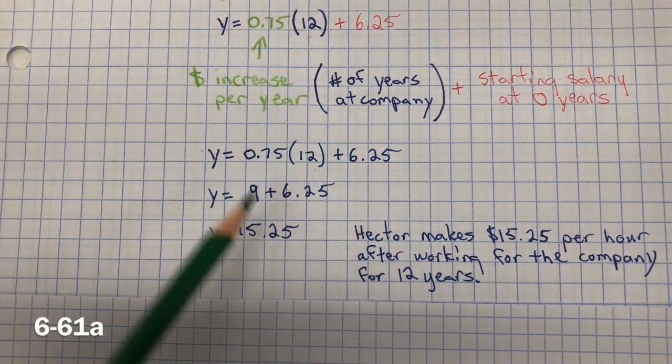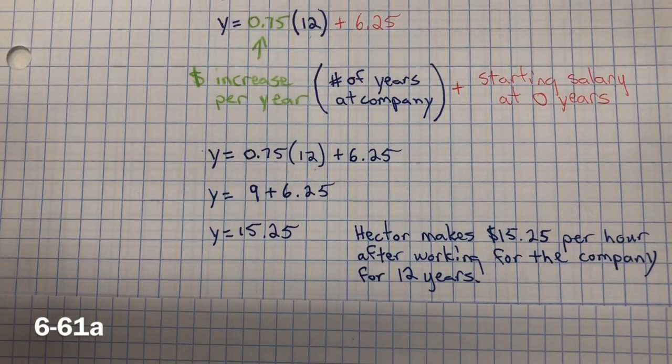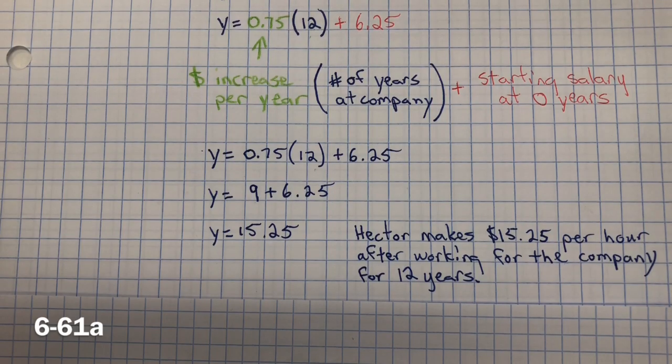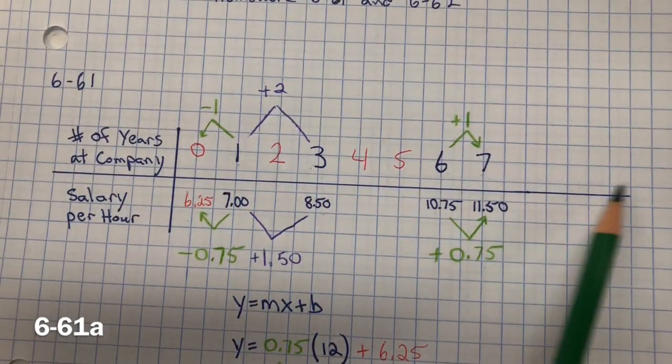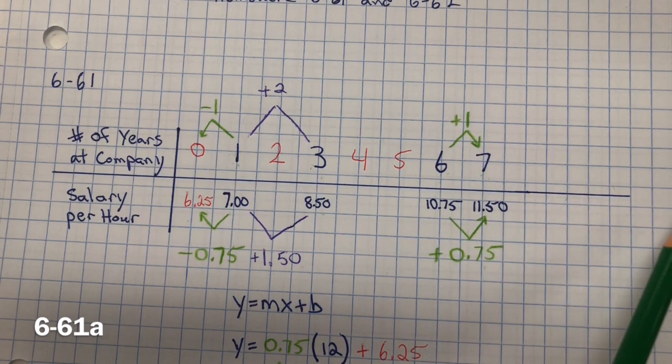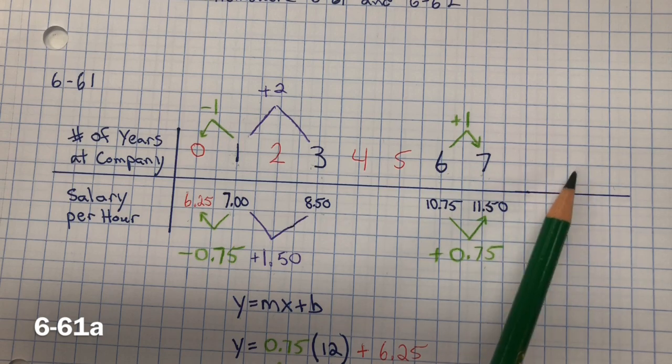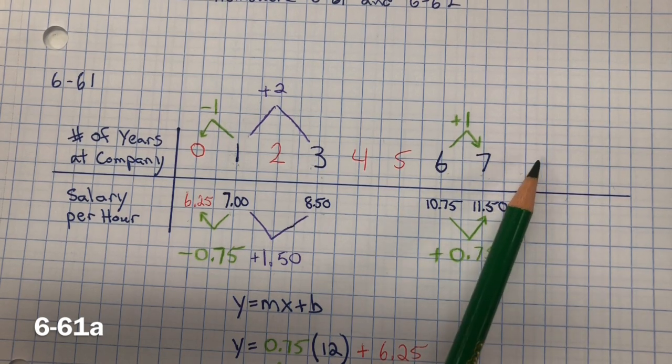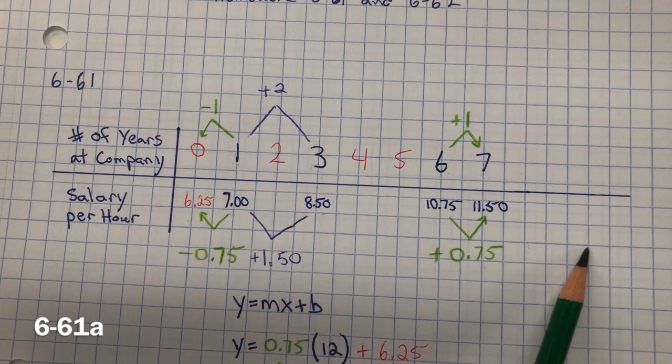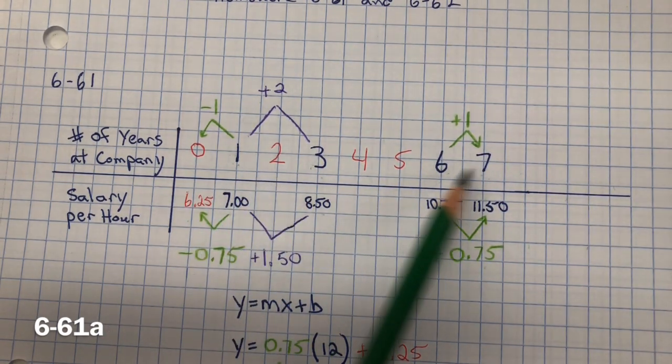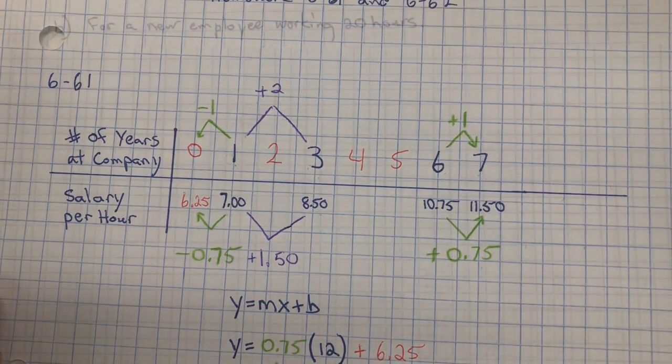The equation works really well when it's asking for maybe 30 years, because it wouldn't make sense to keep going for 30 years on your table. 12 years, it might have been easier to extend the table. Either way works.